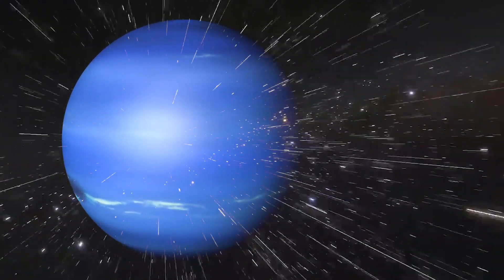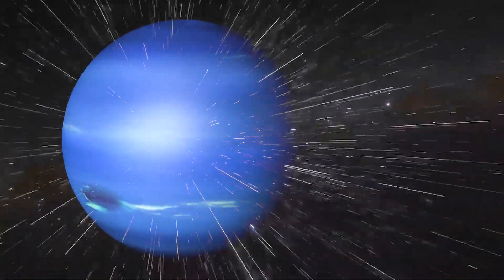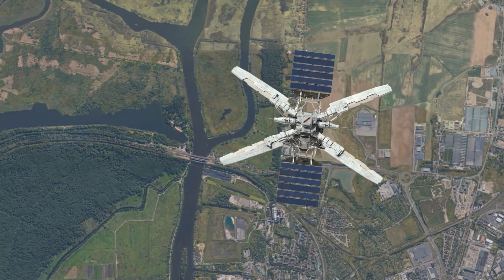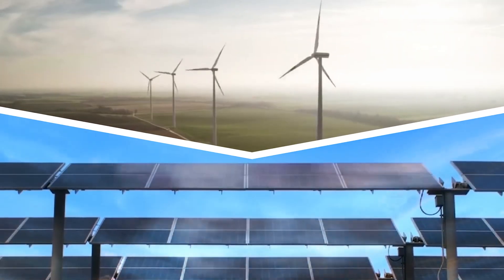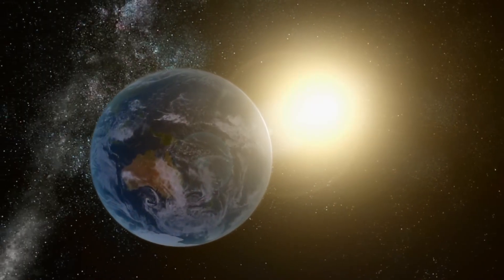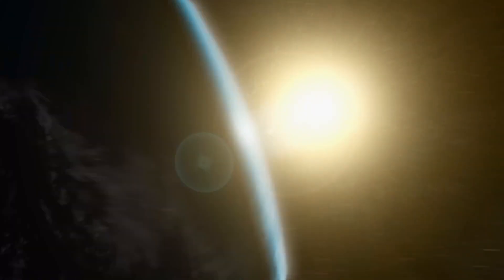A year on Neptune is equivalent to 165 Earth years, making it difficult to observe its seasonal cycles with modern tools. While there might be a theory that suggests more solar energy leads to more wind energy, Earth has shown that only a tiny fraction of solar energy is converted into kinetic energy, or wind, in the atmosphere.